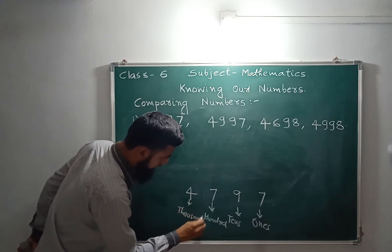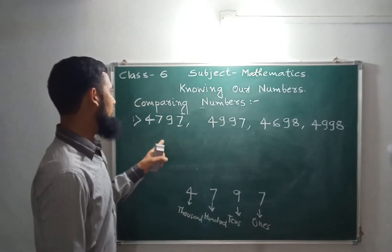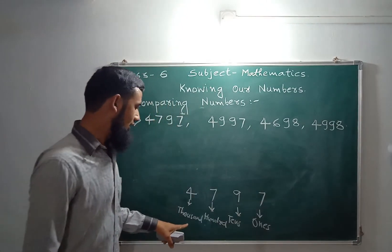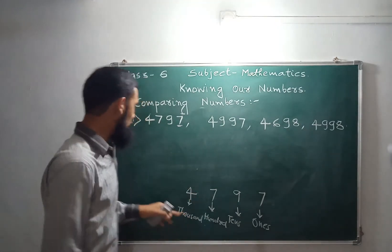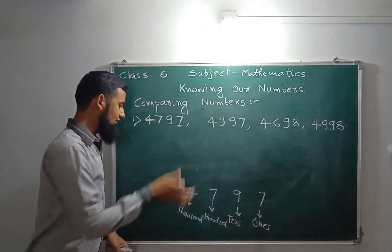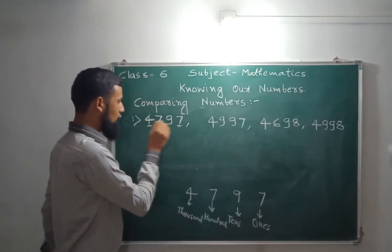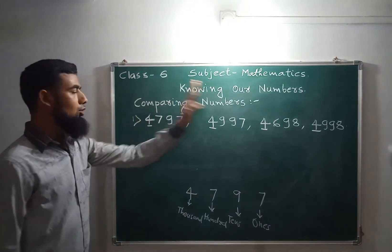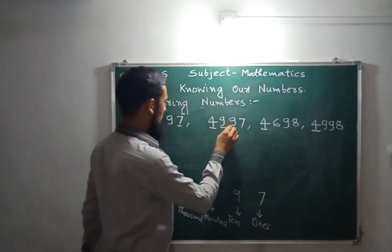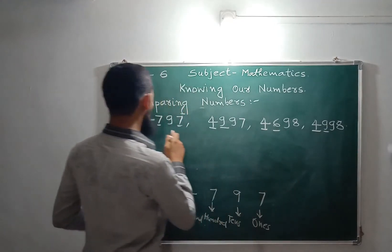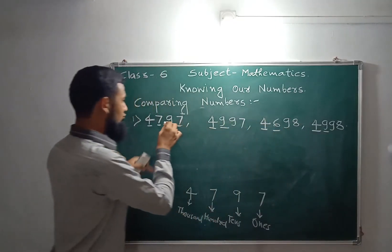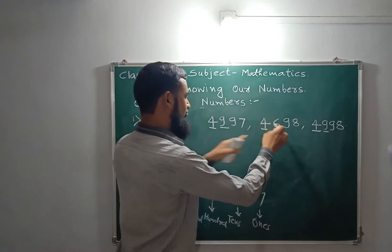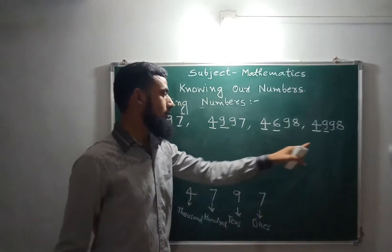If you want to find the greatest number, you start with the highest place value. Here, the highest place is the thousands place: 4, 4, 4, and 4 — all equal. So we move to the next place, the hundreds: 7, 9, 6, 9. Here the two 9s are the same, while 7 and 6 are smaller than 9.